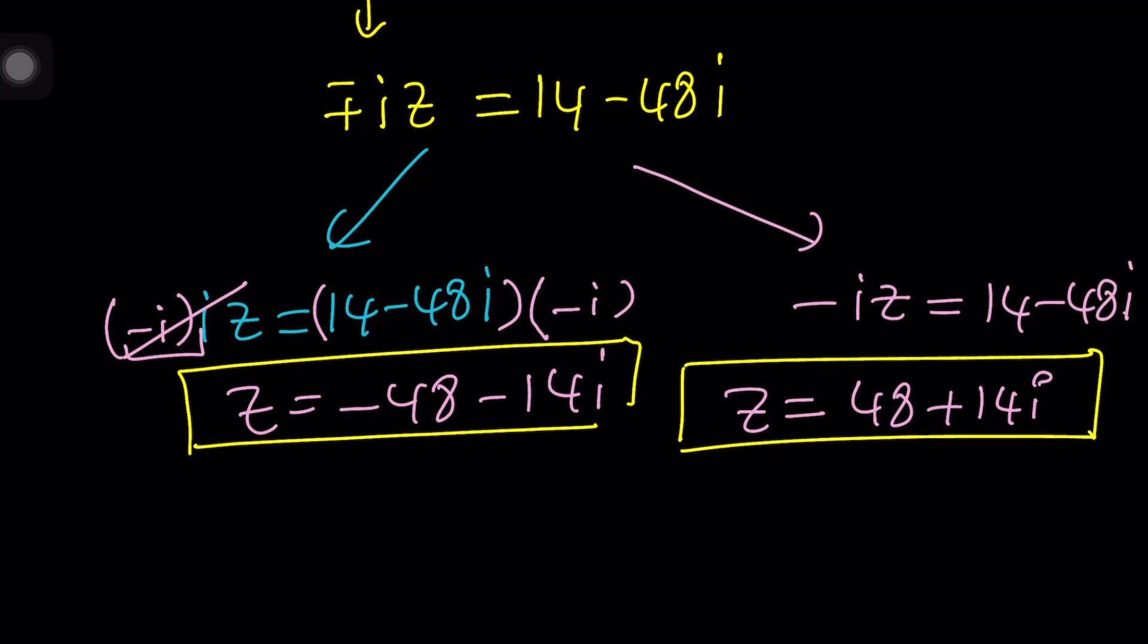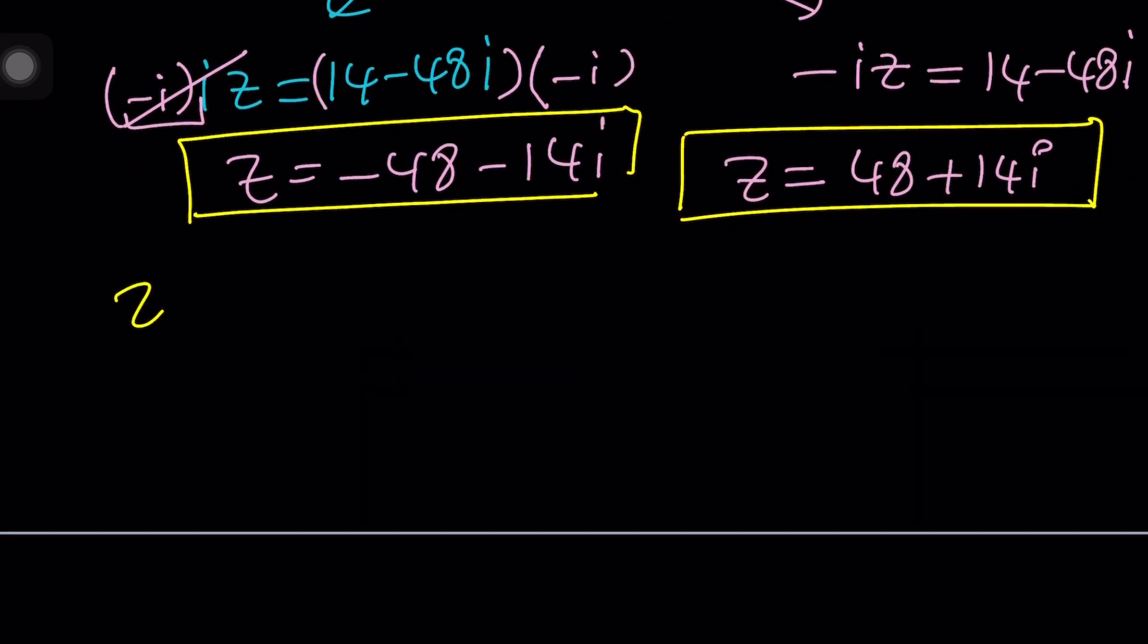Now here's the thing. If you ask this question to Wolfram Alpha, I didn't, but you can do it, then we should be getting what? One solution only, right? I don't think two solutions are going to satisfy this because there's a good reason behind that, and I want you to find out. Anyways, let's talk about the second method and we'll just finish with that.